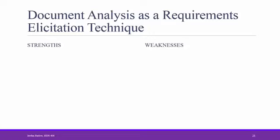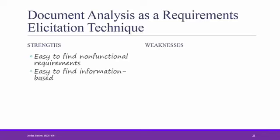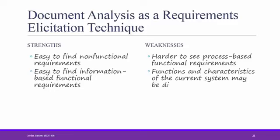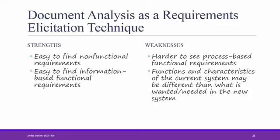Let's summarize document analysis as a requirements gathering technique. The strengths are that it's easy to find non-functional requirements, and it's also easy to find information-based functional requirements. Looking at a form makes it easy to tell what kind of information needs to be saved in a system. However, it's harder to see process-based functional requirements. While you might see what type of information needs to be stored, it's harder to see what is done with that information once it's collected. Functions and characteristics of the current system might be different than what is wanted or needed in the new system. So use document analysis to understand, not necessarily to define new requirements.